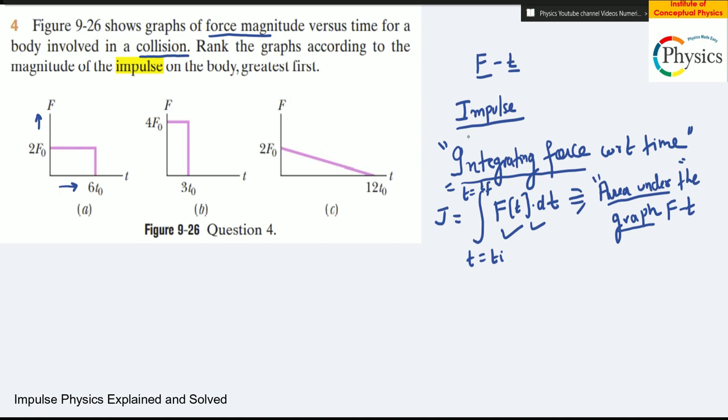If you look into the first graph, what is the area of this graph? The force is constant throughout the time period 6t₀. This is the force. The area of the first graph will tell you impulse. The area of graph one will give you 2F₀ into 6t₀ equals 12F₀t₀.